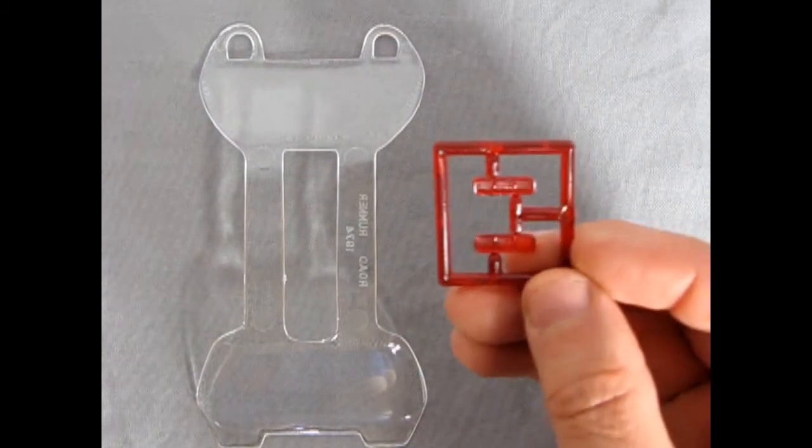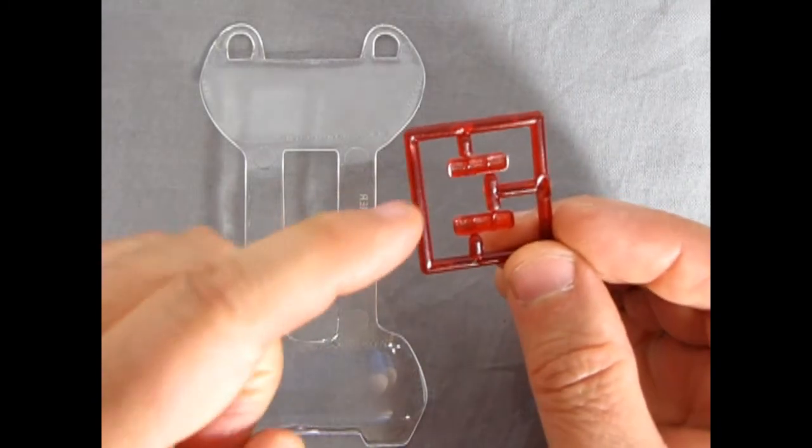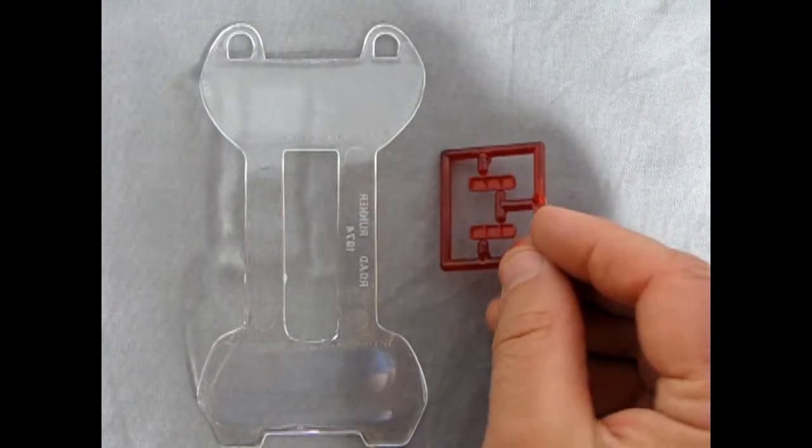One nice thing is the rear tail lights, which have some very nice detail, as well as these high little ridges in here, which you could pick out with some silver paint.